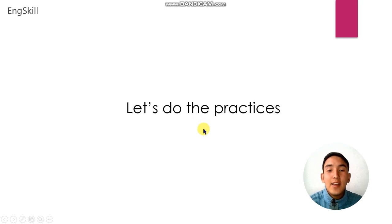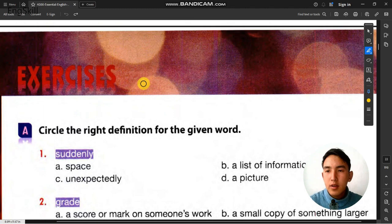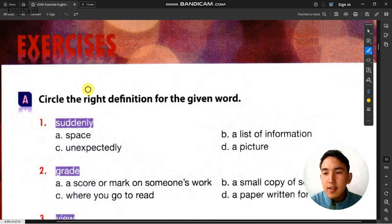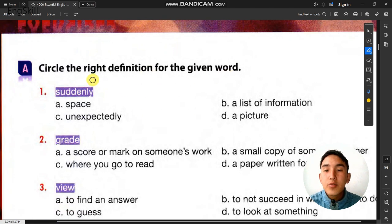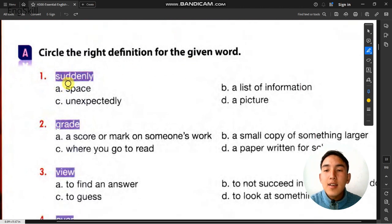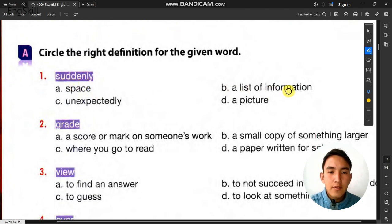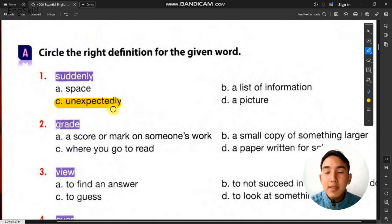Now let's do the practice exercises. Exercise A: circle the right definition for the given word. Word 1 is suddenly — the right definition is unexpectedly. Word 2 is grade — the definition is a score or mark on someone's work. Word 3 is view — the definition is to look at something.